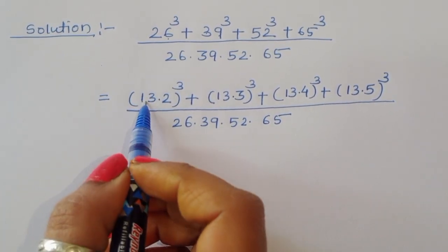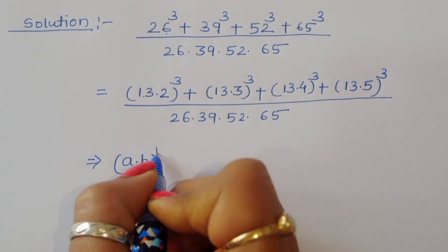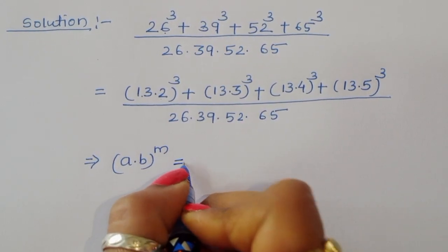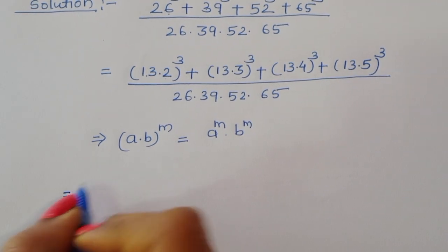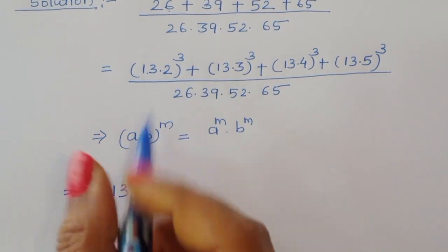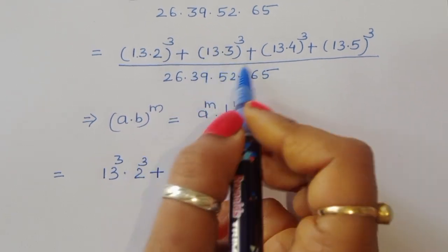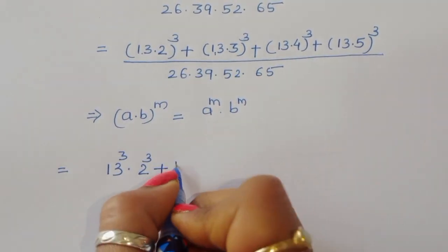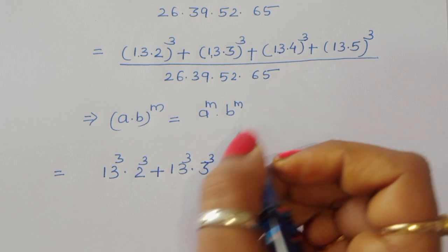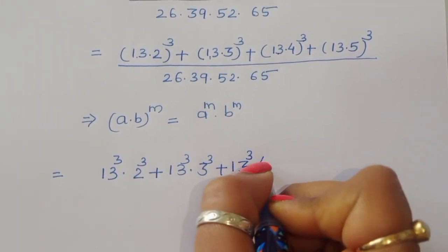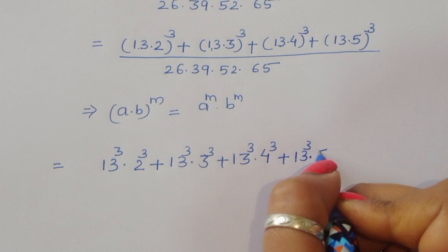Now you can see here (13 times 2) power 3. We know the formula: (a times b) power m equals a power m times b power m. Using this formula, we get 13 power 3 times 2 power 3, plus 13 power 3 times 3 power 3, plus 13 power 3 times 4 power 3, plus 13 power 3 times 5 power 3.